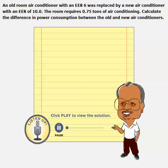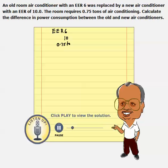An old air conditioner has an EER of 6, and this was replaced by an EER of 10 air conditioner. The room is required to pull out 0.75, or three quarters of a ton.